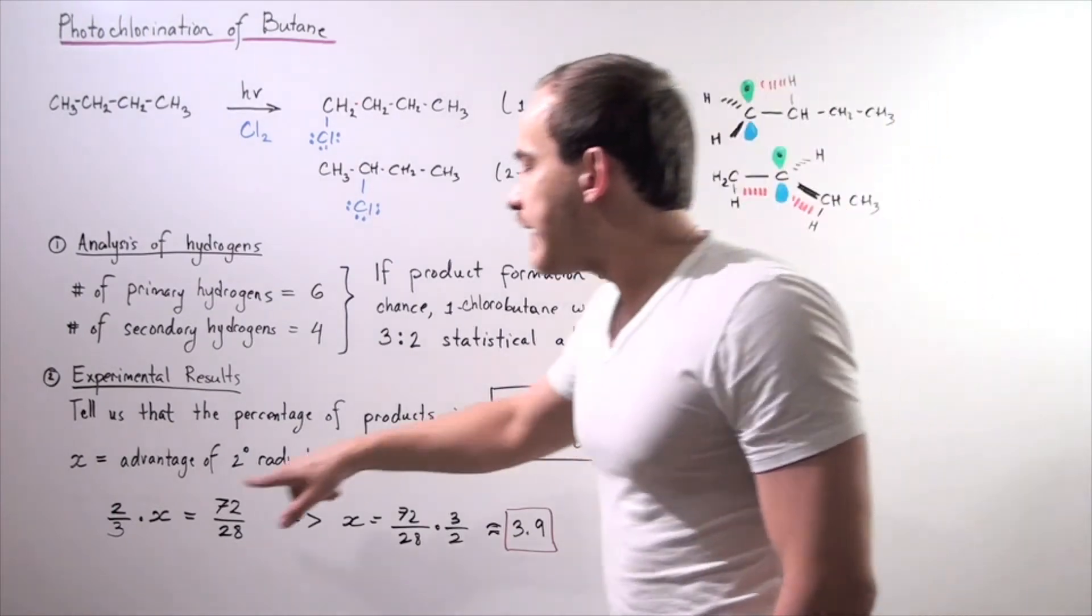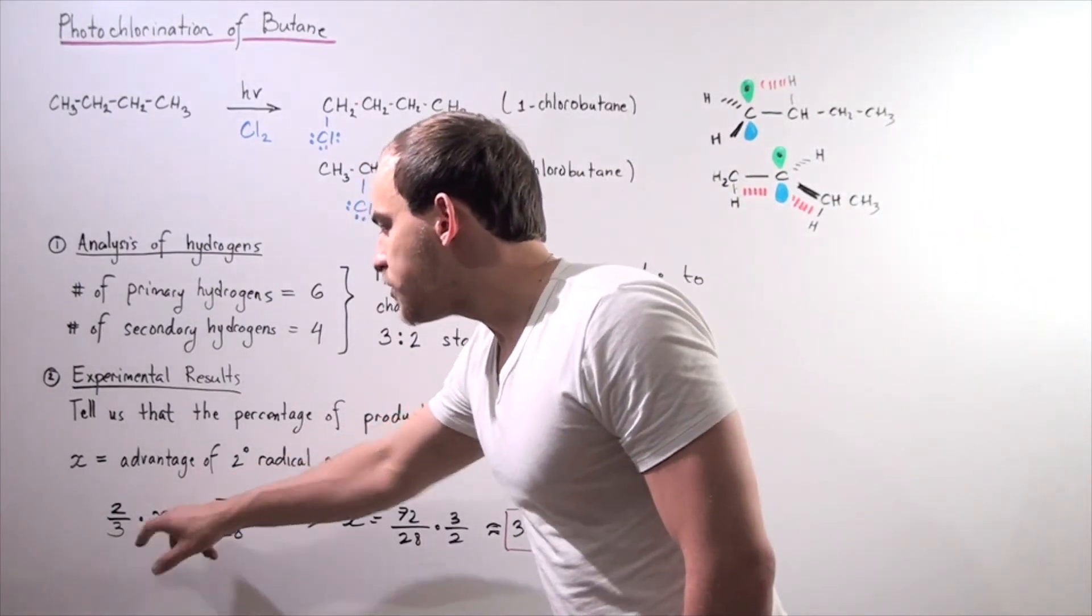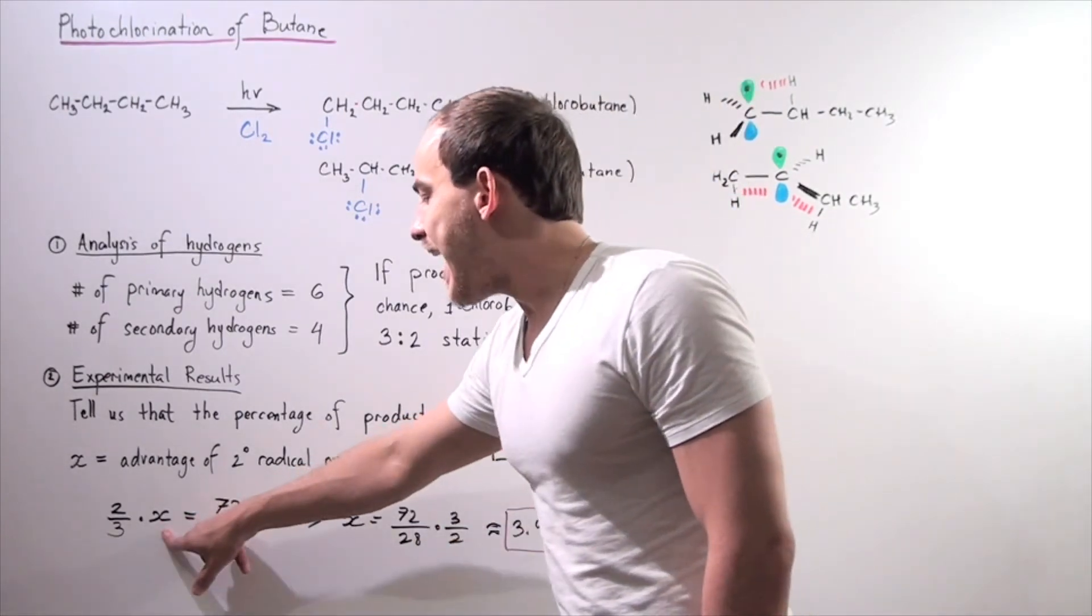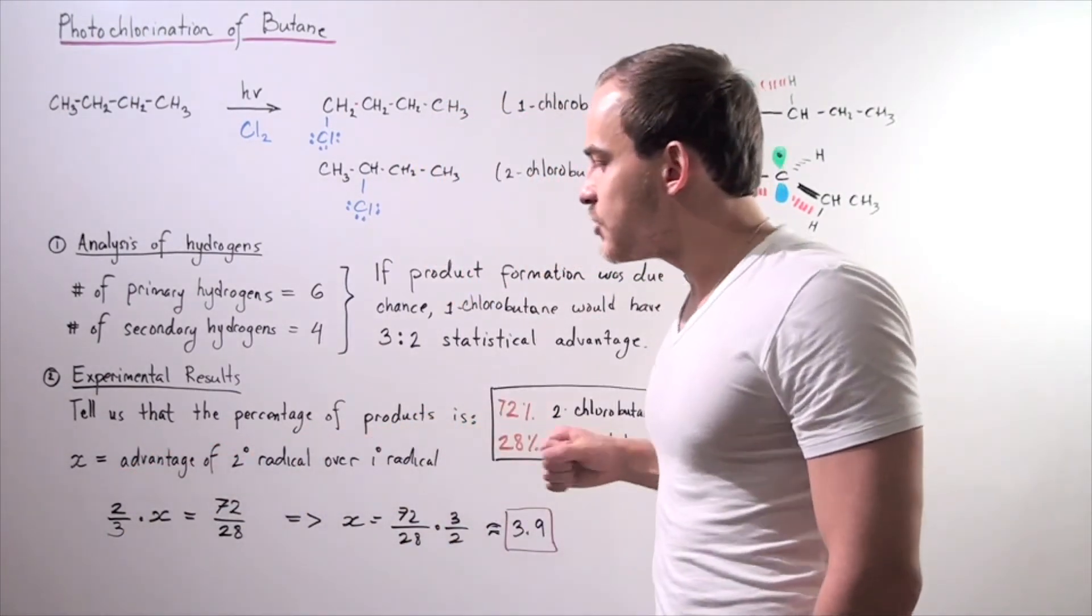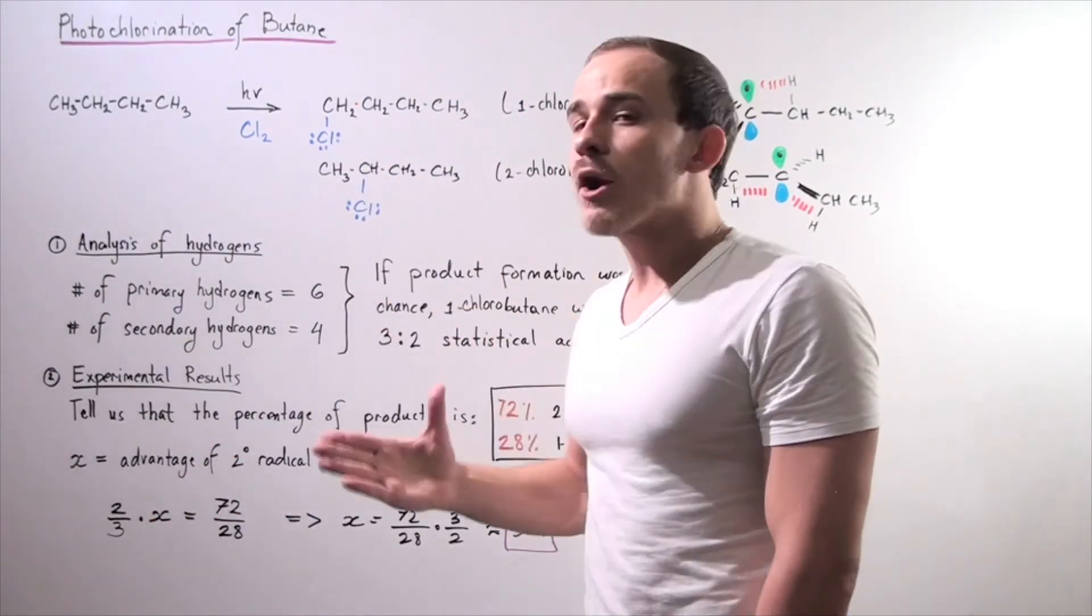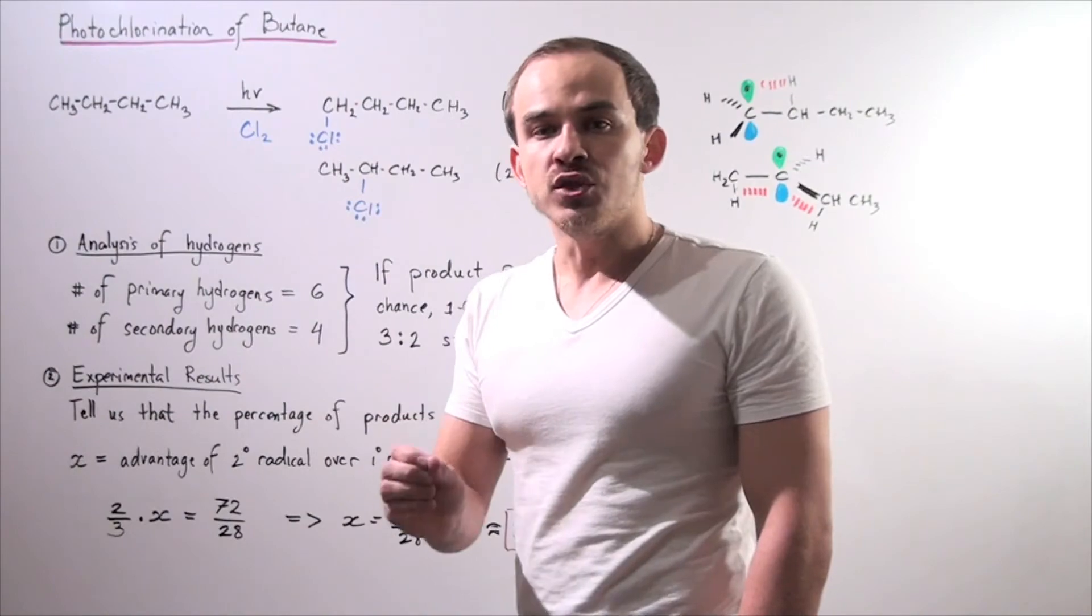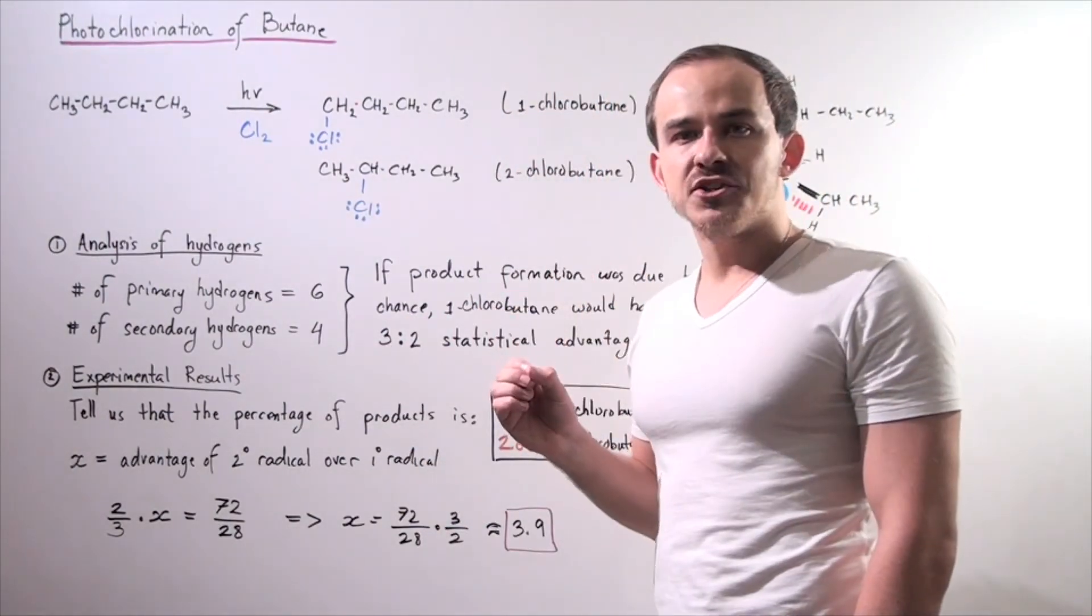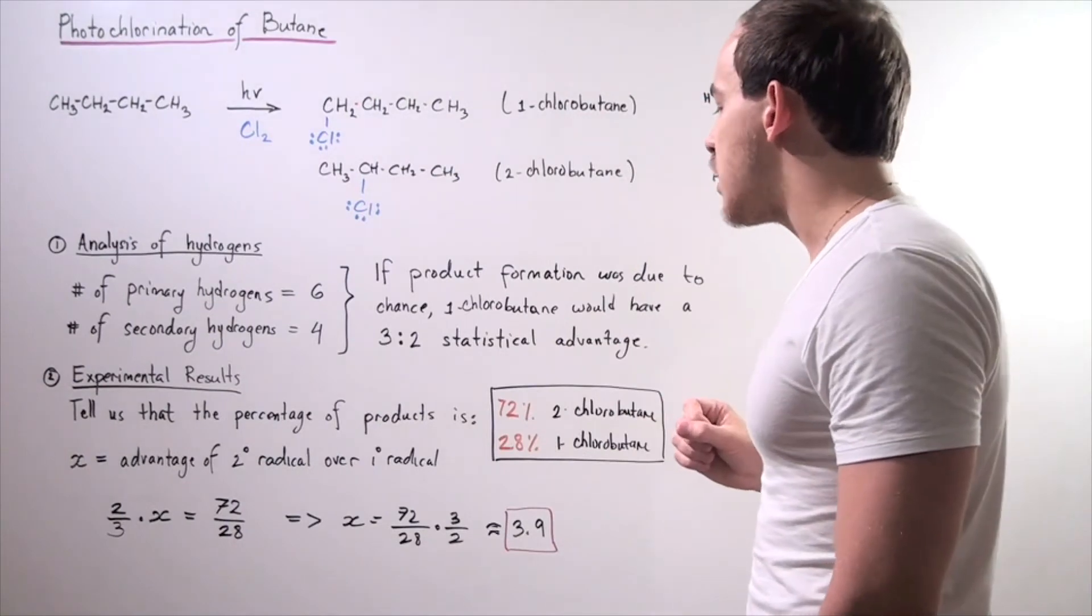So we have 2 over 3 multiplied by x equals 72 divided by 28. This x is simply our advantage, while the 2 over 3 or 4 to 6 is our disadvantage due to the fact that there are fewer of our secondary H atoms than primary H atoms.